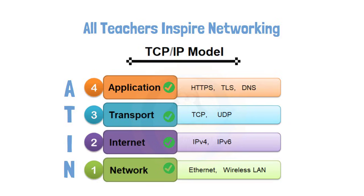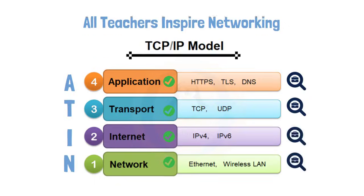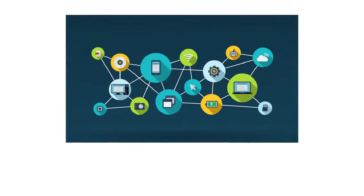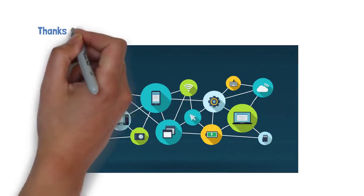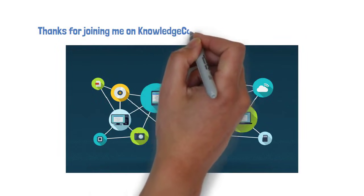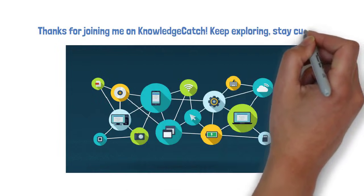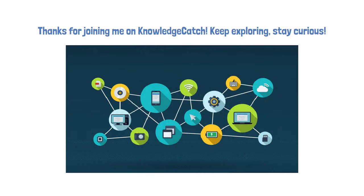To wrap up, the TCP/IP model divides internet communication into four practical layers, each handling a specific job, just like a well-organized postal service. The result? Effortless, reliable digital connections that power your everyday life. Thanks for joining me on Knowledge Catch. Keep exploring, stay curious, and I'll see you in the next one.